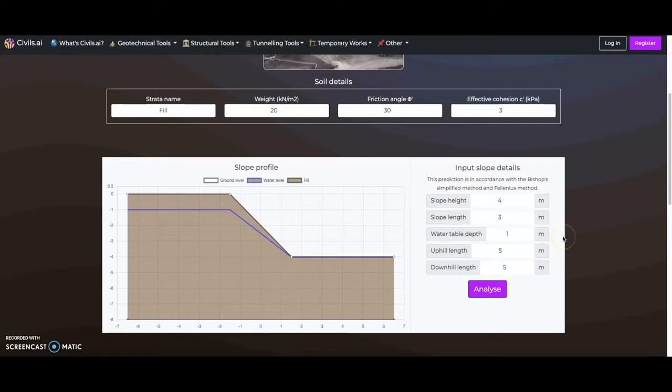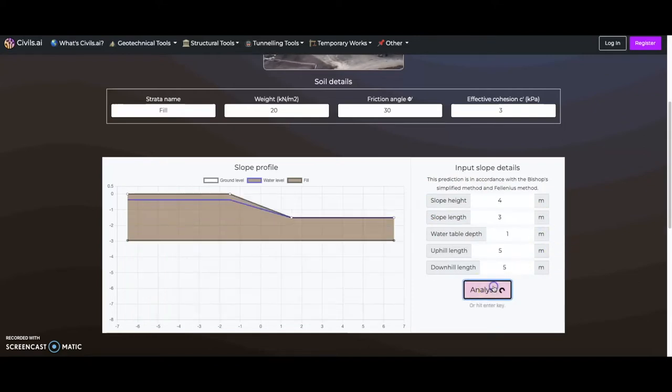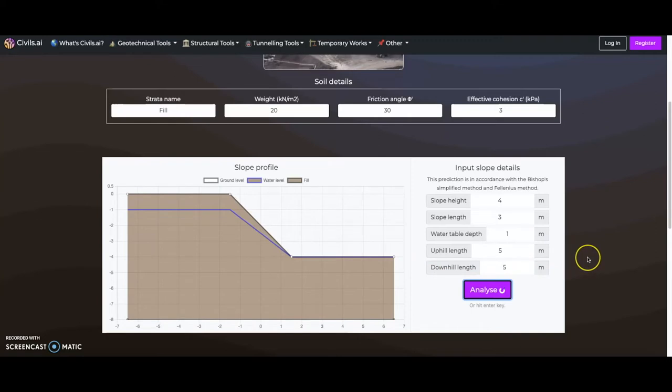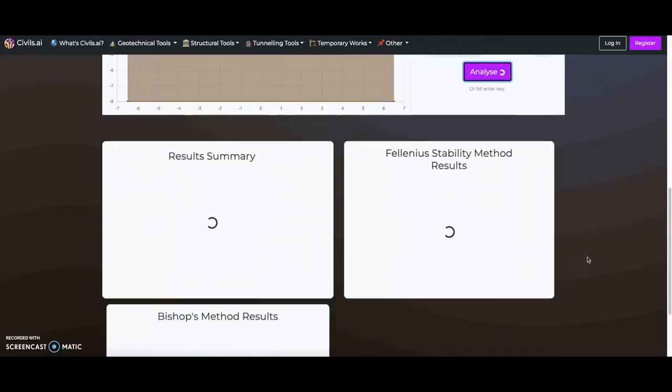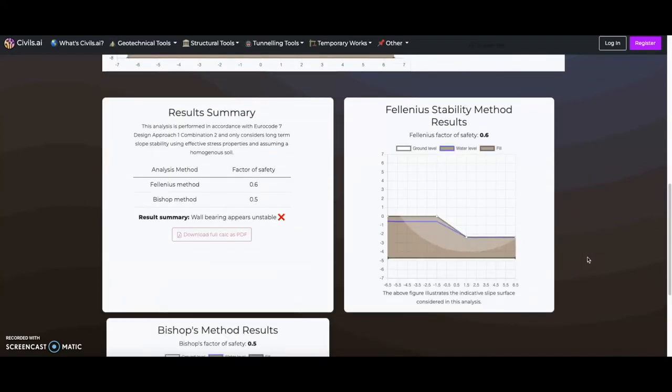After we are satisfied with our model inputs, we can hit analyze or the enter key to run the analysis. Our results will present the predicted factor of safety for this slope using both the Fellenius and the Bishop simplified approach to calculate slope stability.